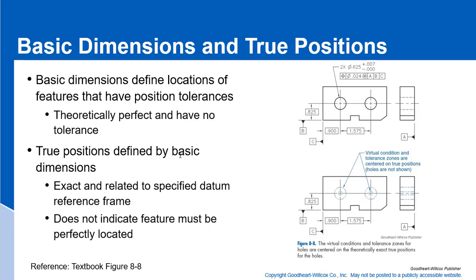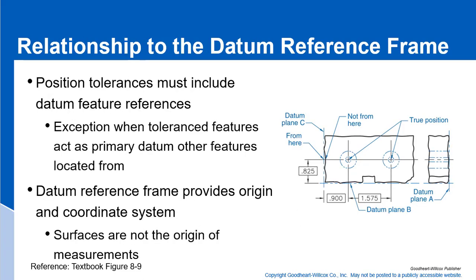True positions are defined by basic dimensions — exact and related to specific datum reference frames. Three planes establish our datum reference frame, and it does not indicate the feature must be perfectly located because we have the tolerance applied in the feature control frame. The position tolerance must include datum feature references, with exceptions when toleranced features act as primary datums that other features are located from.